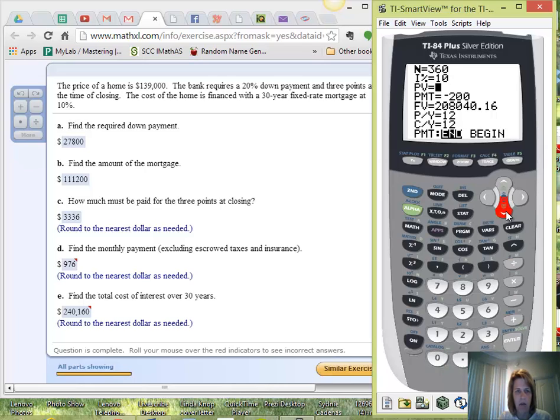The present value is going to be how much of a loan you are getting, so the amount of the mortgage is $111,200. We're going to skip payment for now. Our future value in this case is going to be zero because we want to pay down the loan.